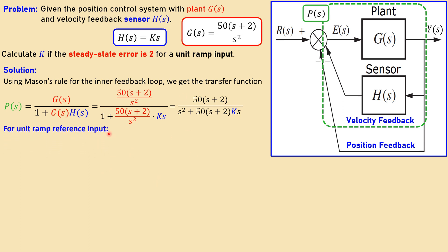Now for the unit ramp reference input, I need this. We have the following: this is the Kv, which is the velocity error constant.